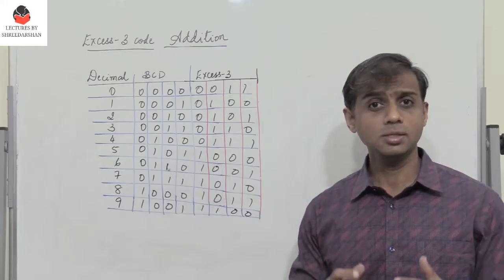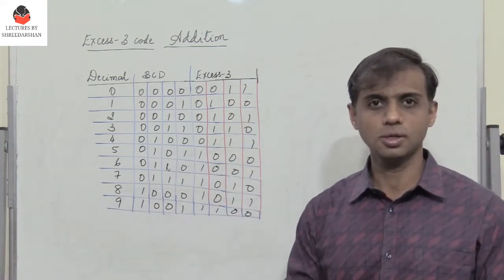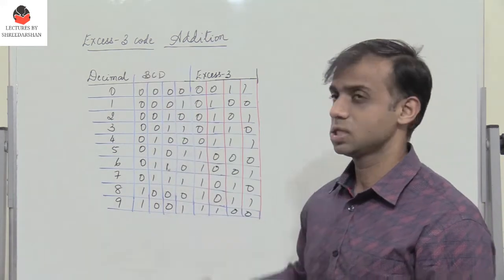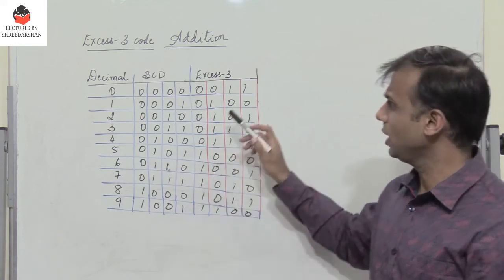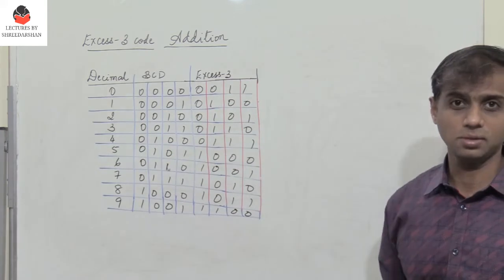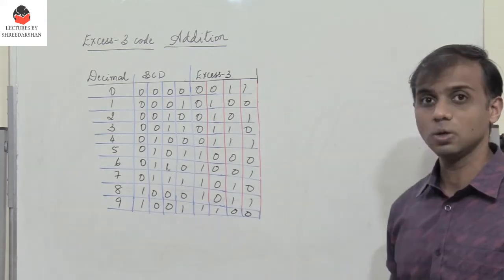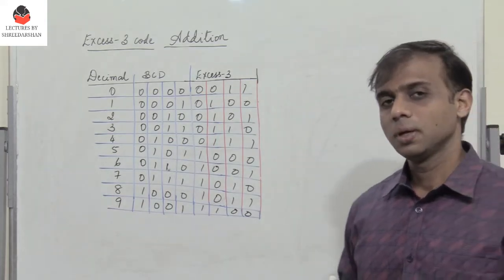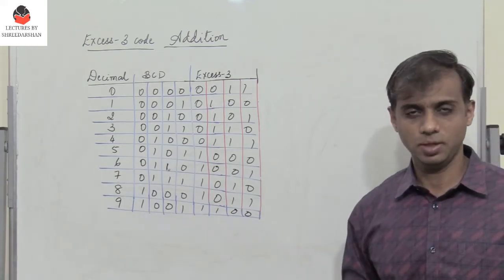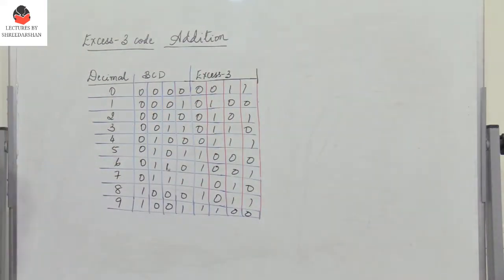Hello friends and students. This is the second lecture in the XS3 code series. In the first video, we saw what an XS3 code is. In this lecture, we shall see how we can perform XS3 code addition. An XS3 code is obtained by adding 3 to the BCD representation — we add 0011 to the BCD to get all XS3 codes. The XS3 code is an unweighted code and is self-complementary. With these basics, let us see how we can add two XS3 numbers.